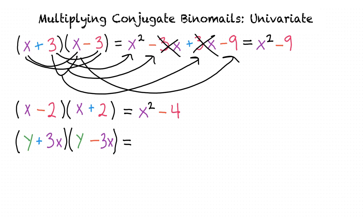In this last example, our first term of our final multiplied answer would be y squared minus 9x squared. This shortcut technique is useful whenever we're multiplying conjugate binomials.